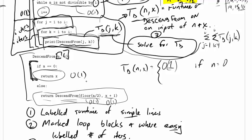Well down here we're calling descend from on floor of n over 2 and x plus 1. How do we describe that? It is exactly T_D of floor of n over 2 and x plus 1. That's why we give it a name, so that right here when we need to say however long it takes, we can say that. Our name lets us say however long descend from takes on floor of n over 2 and x plus 1. Being able to say that is very valuable.